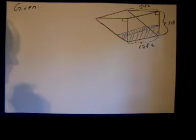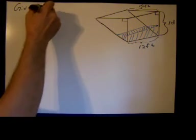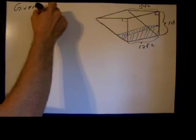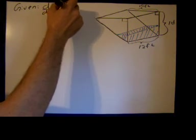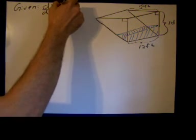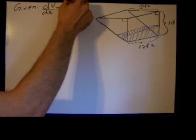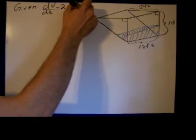Well anyway it's being poured into the trough at the rate of two cubic feet per minute. Well cubic feet is a volume. So I'm going to say what we're given is the rate at which the volume is changing and that's two feet cubed per second.